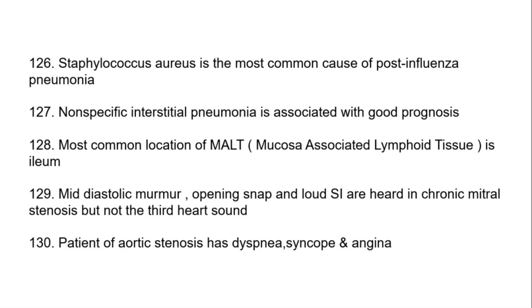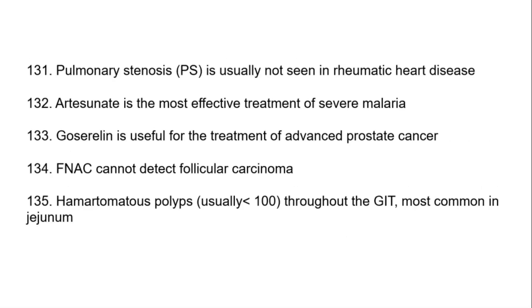Mid-diastolic murmur, opening snap, and loud S1 are heard in chronic mitral stenosis but not the third heart sound. Patient of aortic stenosis has dyspnea, syncope, and angina. Pulmonary stenosis is usually not seen in rheumatic heart disease.